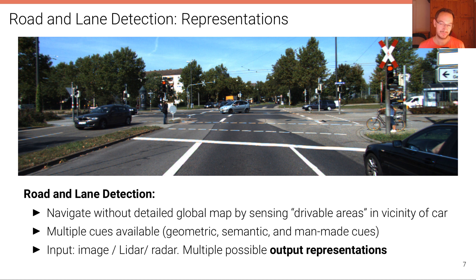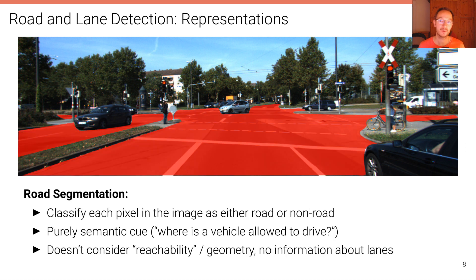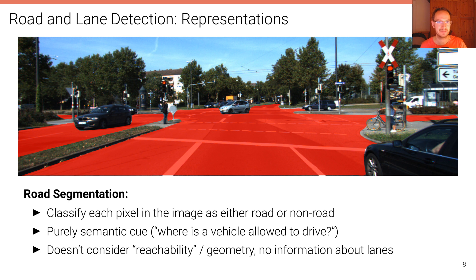There are multiple possible output representations. The first is road segmentation — a semantic cue where the goal is to classify each pixel in the image as either road or non-road. In an ideal case, all road pixels are highlighted in red. Road segmentation is a purely semantic cue telling us where a vehicle is allowed to drive, and it can be computed using semantic segmentation algorithms such as deep neural networks.